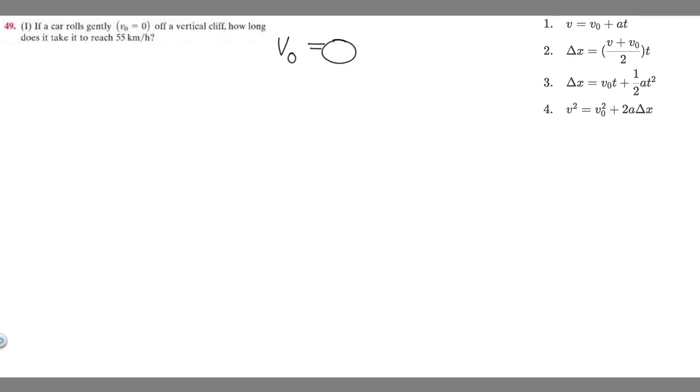But what else do we know? Well, we know it's rolling off a vertical cliff. For these problems, we're assuming acceleration is constant. So acceleration, since it's falling off a vertical cliff, the force of gravity is going to be acting on it, which is minus 9.8 meters per second squared. That's just something you have to memorize and know for these problems, that the force of gravity, since it's rolling off a vertical cliff, is minus 9.8 meters per second squared.